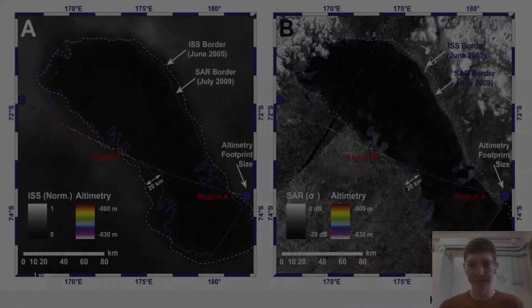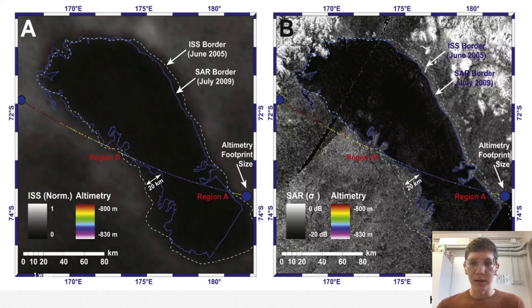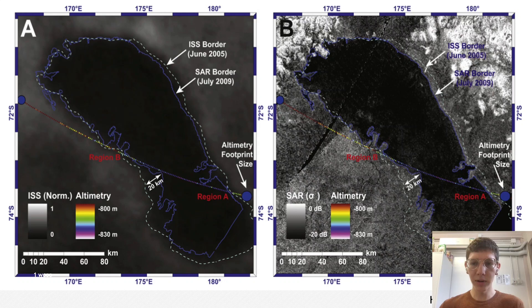This figure shows an equidistant cylindrical projection of Ontario Lacus, which is the largest lake in the southern region. The lake border from the 2005 ISS image is shown in cyan, while the 2009 SAR border is blue. Figure A is an ISS image obtained in June 2005, and the ISS shoreline is defined by following a constant contour of relative brightness, referenced to a local offshore pixel intensity.